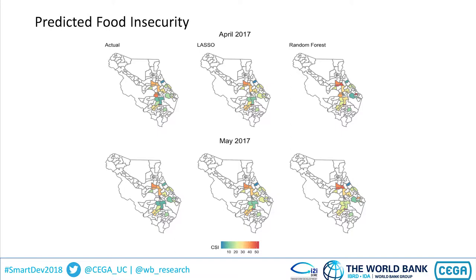At a very localized level, this is our prediction of where exactly acute food insecurity is going to be. We compare the actual outcomes to the outcomes of our two algorithms.